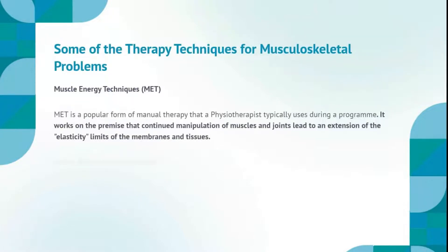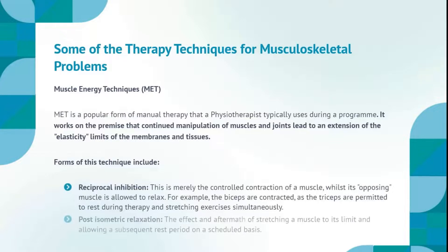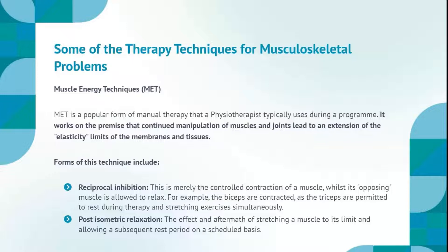Some of the therapy techniques for musculoskeletal problems. Muscle energy techniques, MET: MET is a popular form of manual therapy that a physiotherapist typically uses during a program. It works on the premise that continued manipulation of muscles and joints leads to an extension of the elasticity limits of the membranes and tissues. Forms of this technique include reciprocal inhibition, the controlled contraction of a muscle whilst its opposing muscle is allowed to relax — for example, the biceps are contracted as the triceps are permitted to rest. Post-isometric relaxation involves stretching a muscle to its limit and allowing a subsequent rest period on a scheduled basis.